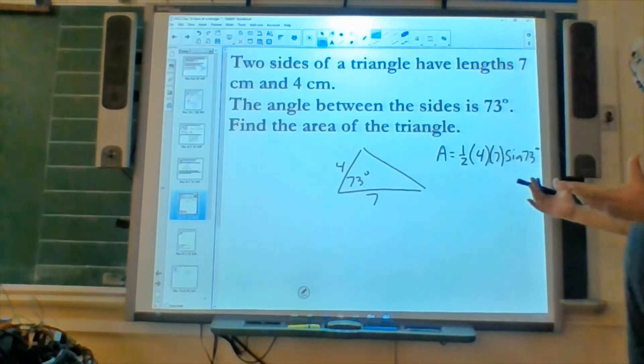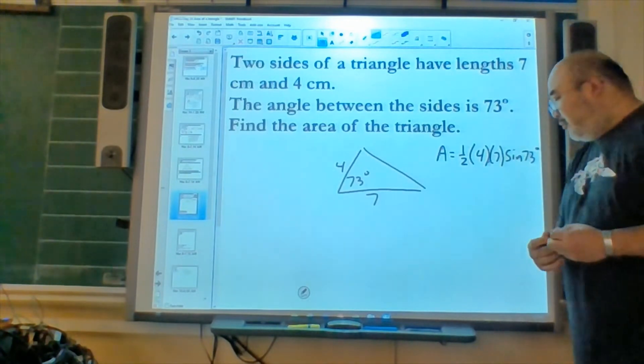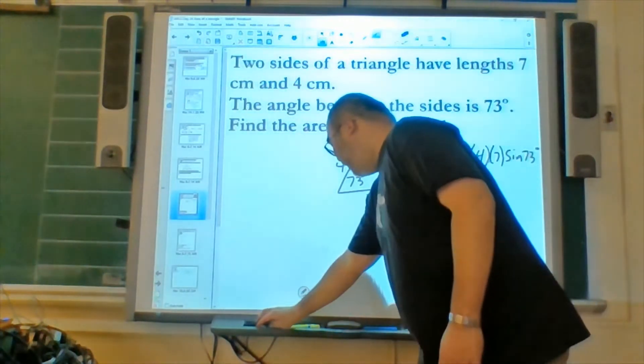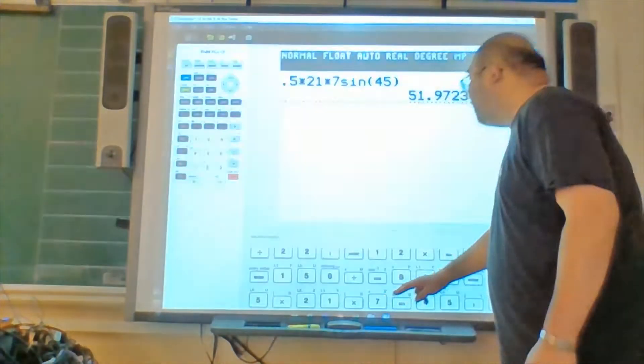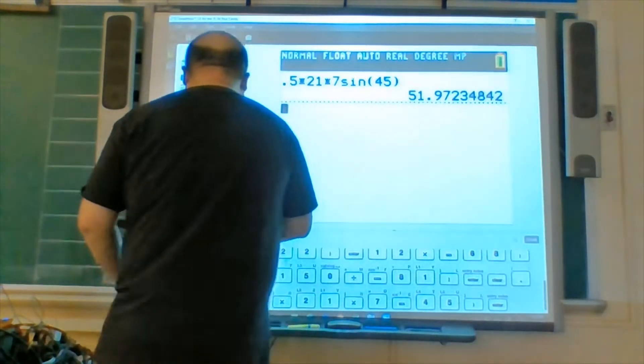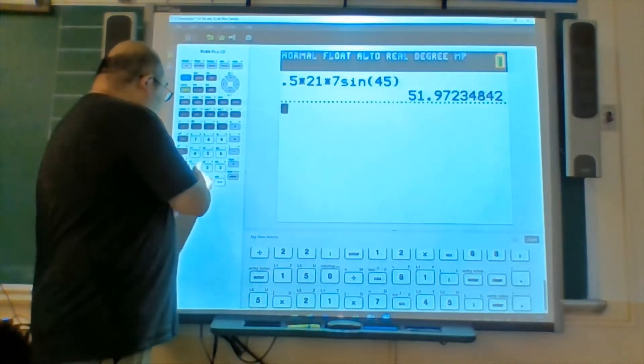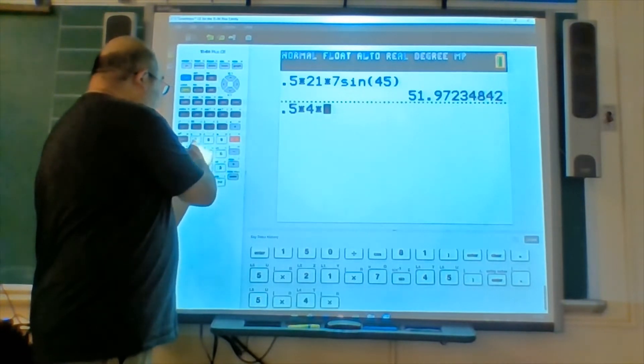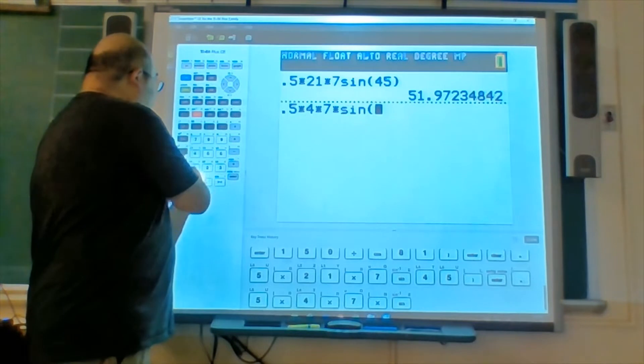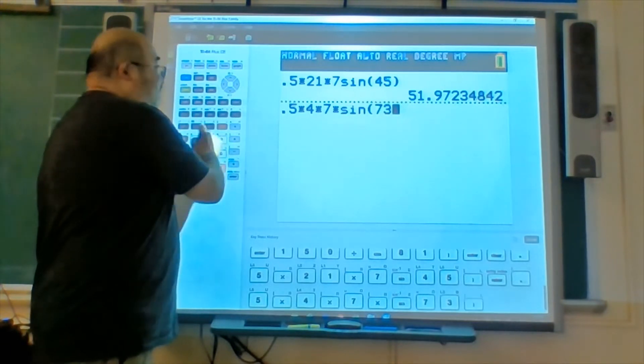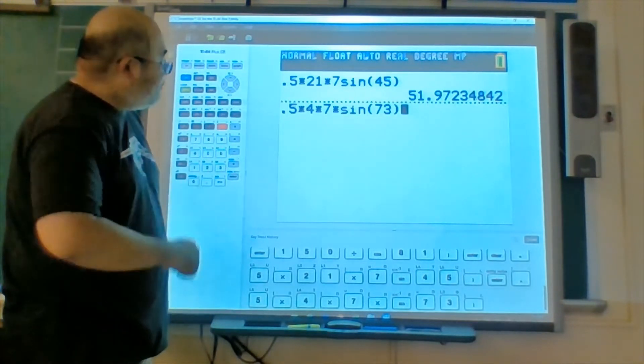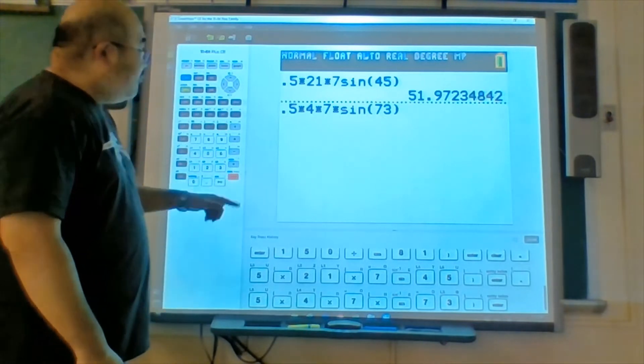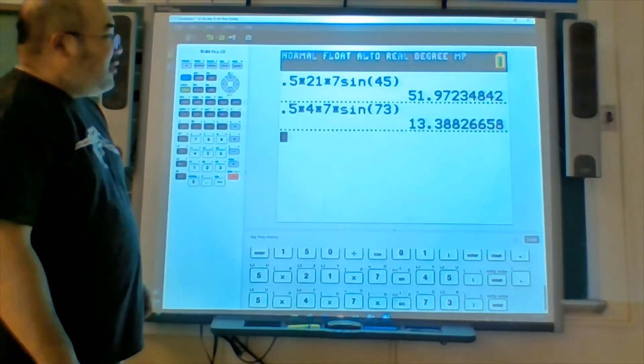So now, it's plugged into the calculator. Let's take a look. One half times 4 times 7 times the sine of 73. Let's have the calculator. One half times 4 times 7 times the sine of 73 degrees. And then you just enter calculator, and boom, we have 13.38826658.